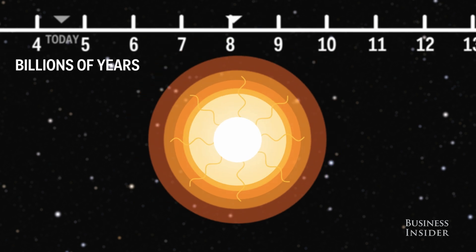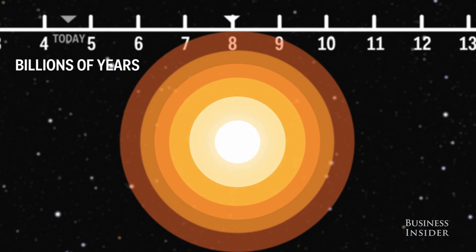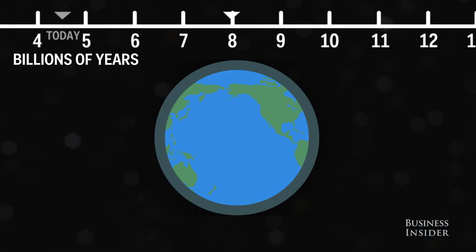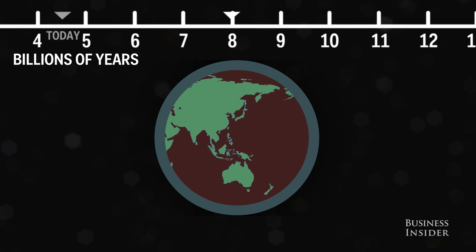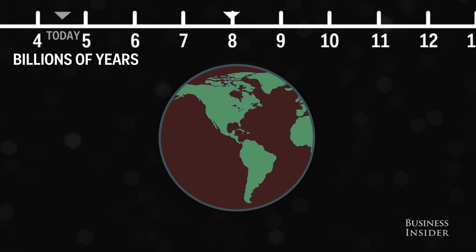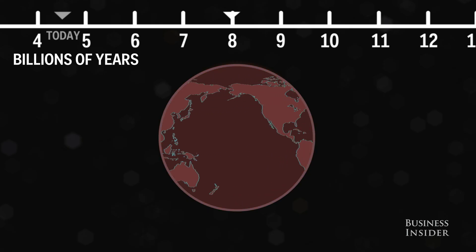In 3.5 billion years, the Sun will shine 40% brighter than today. At this point, Earth's oceans will boil, and the ice caps will permanently melt. All the moisture in the atmosphere will be lost. Life will not likely survive, and Earth will become brutally hot and dry, like Venus.